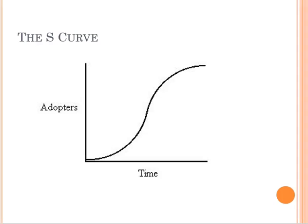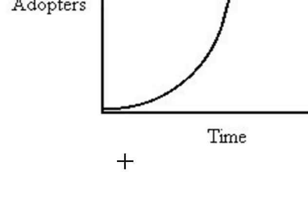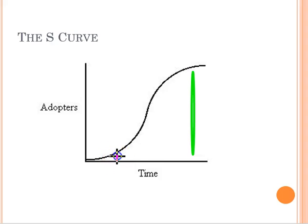Rogers tells us that the diffusion and adoption process is about two basic components: adopters and time. Rogers provides the s-curve of adoption, which says that as time progresses, more people adopt the new innovation. Early in the process we have fewer people adopting, and later we get more people adopting — simple enough.